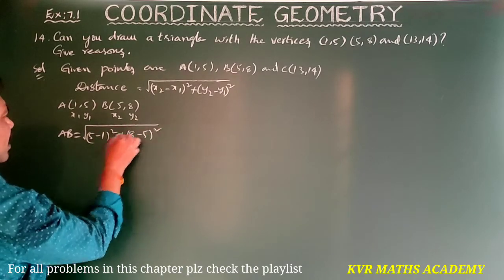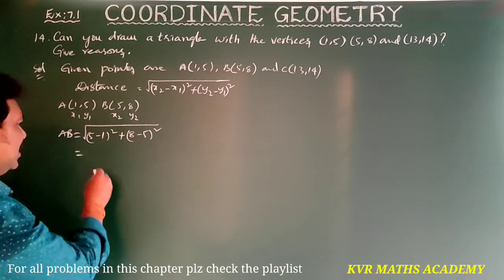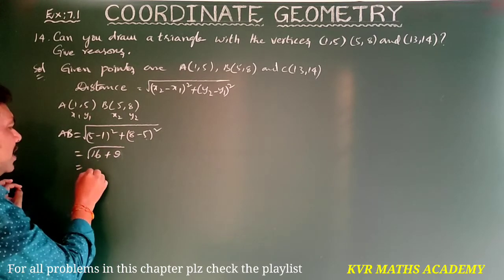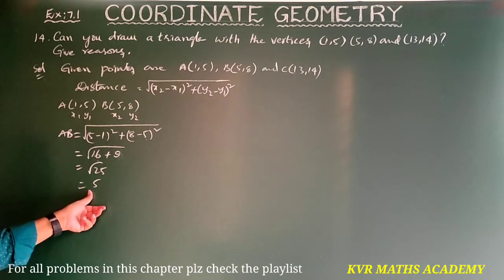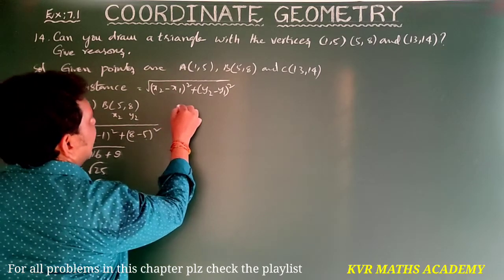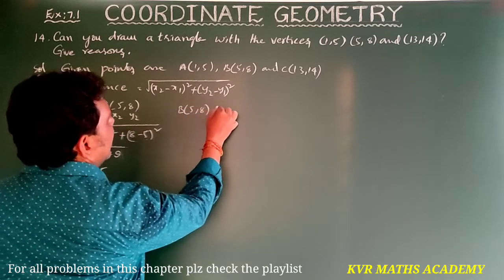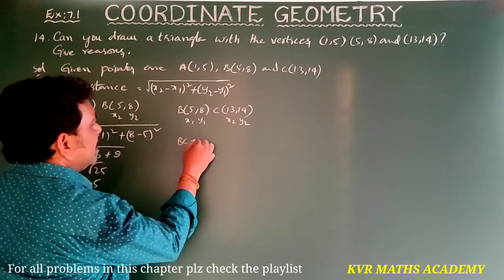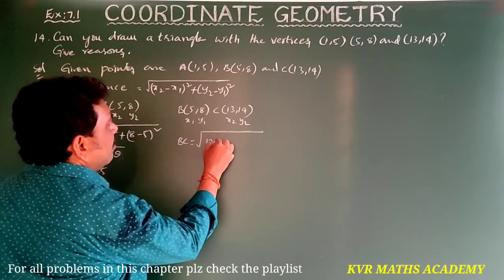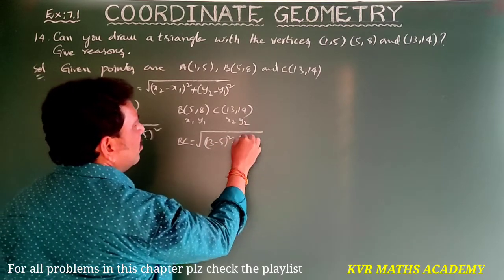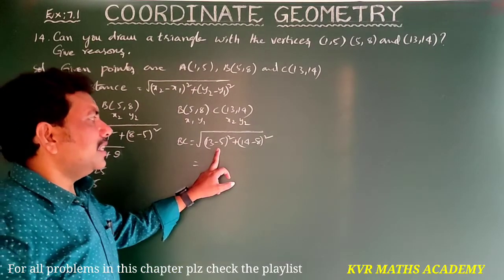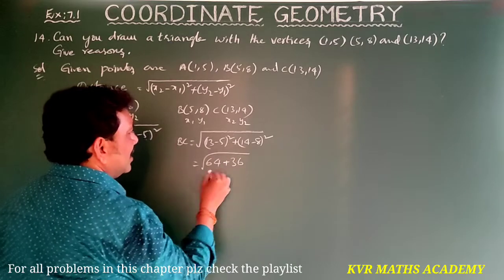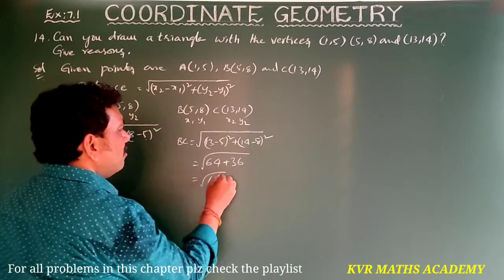That gives root of 16 plus 9, which is root of 25, so AB equals 5. Next, take B(5, 8) as (x1, y1) and C(13, 14) as (x2, y2). BC equals root of (13 minus 5) whole square plus (14 minus 8) whole square, that is root of 64 plus 36, which is root of 100, so BC equals 10.